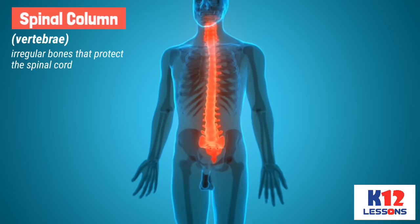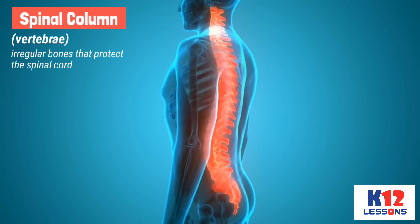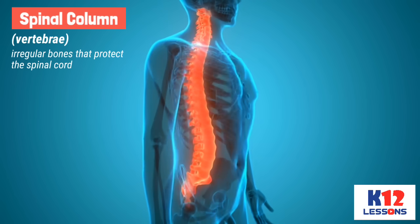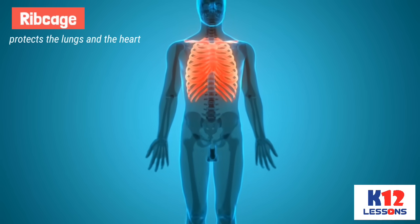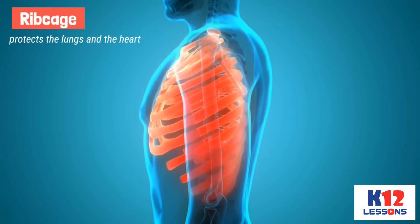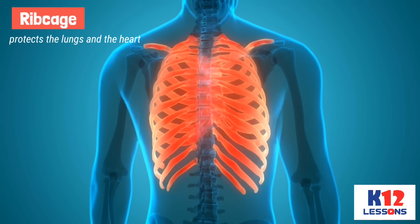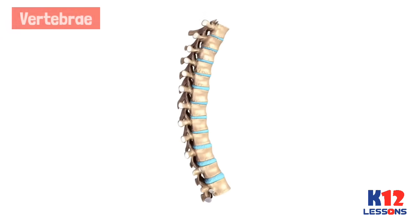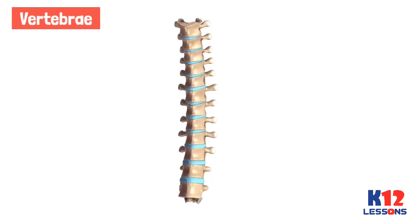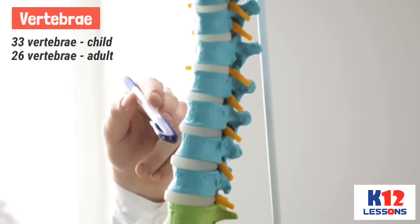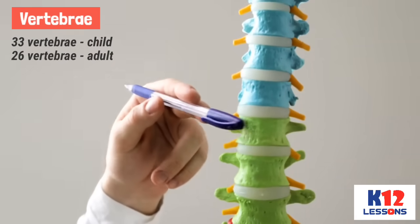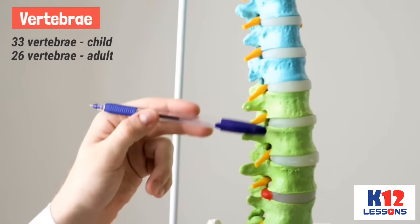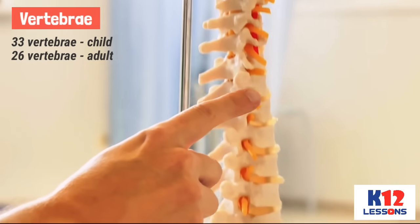The spinal column or vertebrae are irregular bones that protect the spinal cord, while the ribcage protects the lungs and the heart. Vertebrae are arranged on top of one another and move over each other slightly. There are 33 vertebrae in the spinal column of a child, and 26 in an adult. This is because as the child grows, the last seven bones join together to form just two bones.